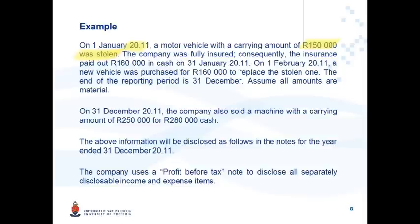On 1 February 2011, a new vehicle was purchased for 160,000 to replace the stolen one — that is the third economic event. Year-end is 31 December; assume all amounts are material. So in that scenario we had three different economic events, and all three have to be disclosed separately. On 31 December 2011, the company also sold a machine with a carrying amount of 250,000 for 280,000 cash. That is considered one economic event, so you may disclose the net effect of that.